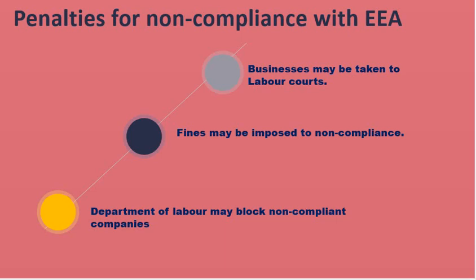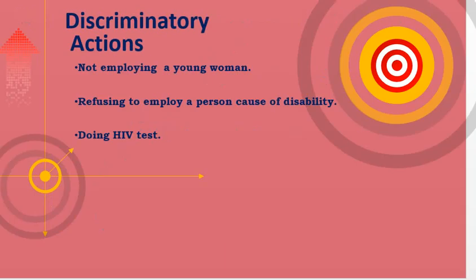What are the discriminatory actions with regards to the Employment Equity Act? Not employing a young woman because she would want to have children in the future would be seen as discriminatory. Refusing to employ a person because he or she has strong religious beliefs or has a disability is also a discriminatory action.